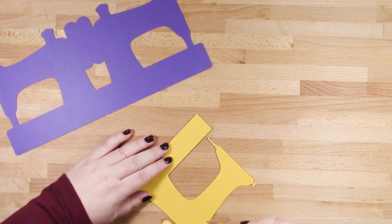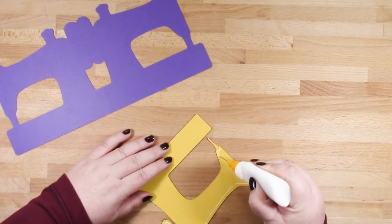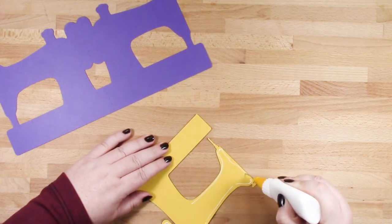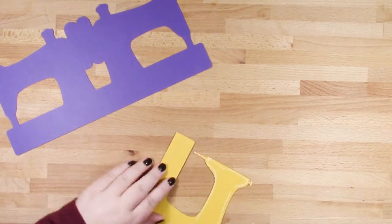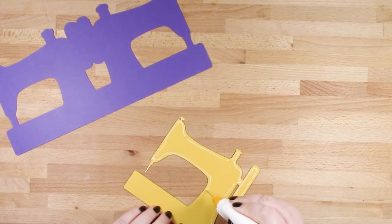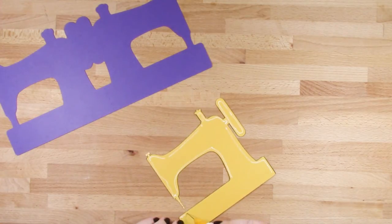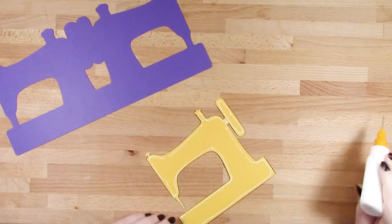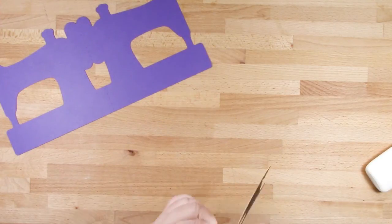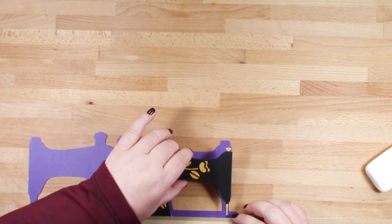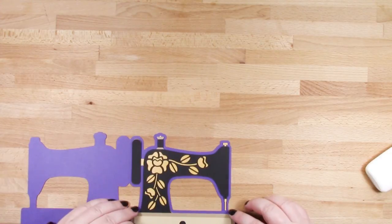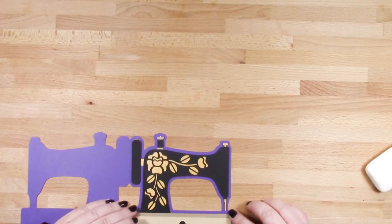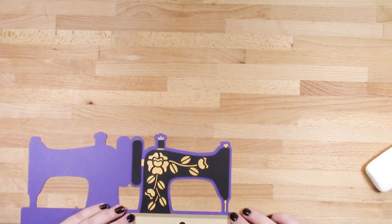Okay, so I'm gluing the front of my card directly down onto my card base. You could use some 3D foam pads here but I think it helps to keep the needle in place because it's quite delicate. Just placing that with an even border all the way round.